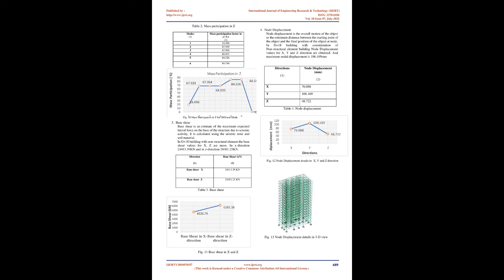Response reduction factor of the building R equals 5 (Special RC Moment Resisting Frame, Table 7 of IS-1893 Part 1-2002). Alternatively, assuming that analysis of the building is not possible to assess deflections under seismic loads, one may use the drift limits. Maximum inter-story drift allowance as per Clause 7.11.1 of IS-1893 Part 1-2002 is 0.004 times the story height.